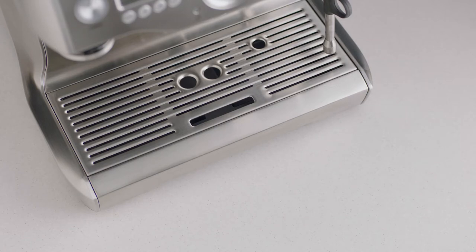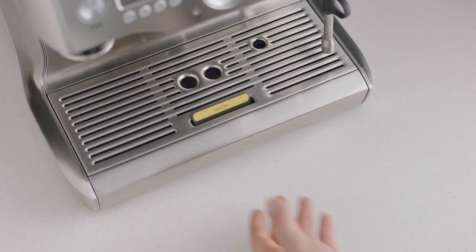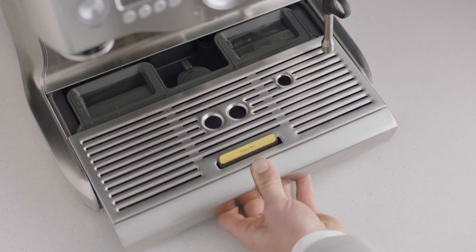The drip tray should be removed, emptied, and cleaned periodically with warm water, particularly when the empty me indicator shows.